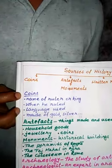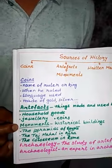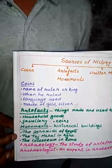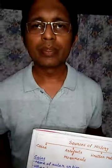So children, today we learned about different sources of history. We will stop here for today and learn the rest in the next video. In the next video, we will learn about written records, which is another source of history. Today we have learned about coins, artifacts, and monuments. If you have any doubt, you can write in the comment box and I will clarify your doubt. Thank you.